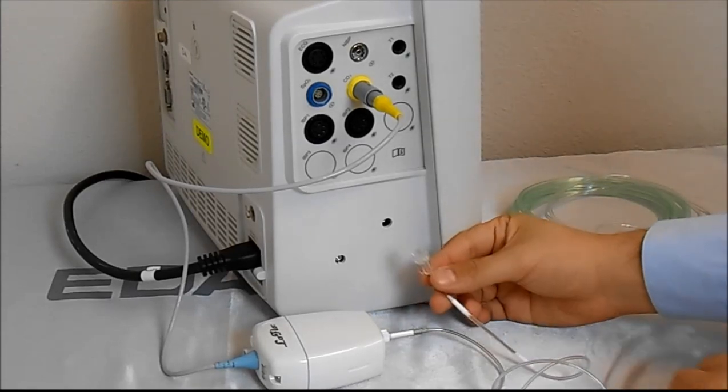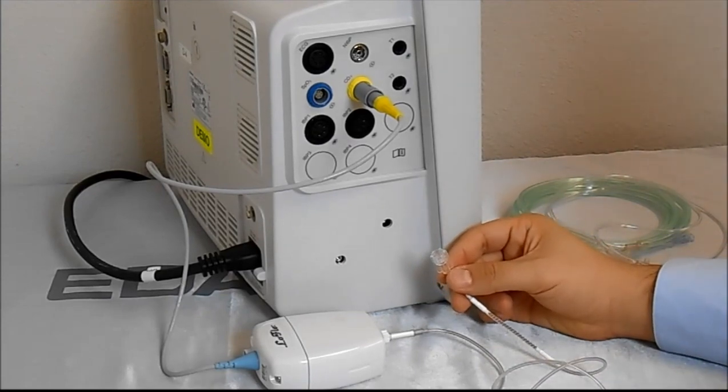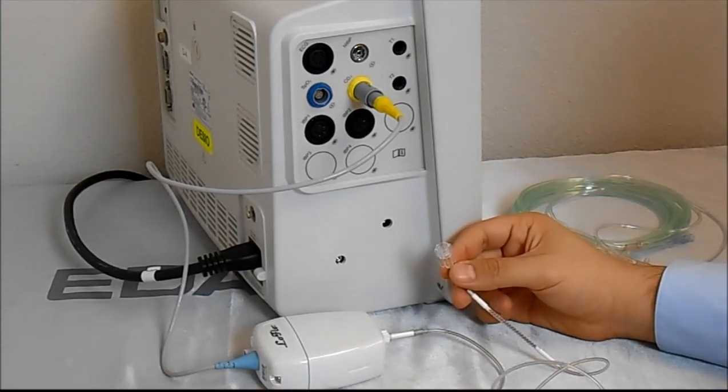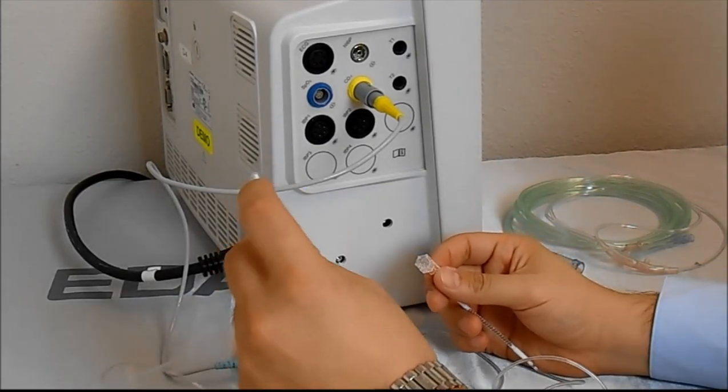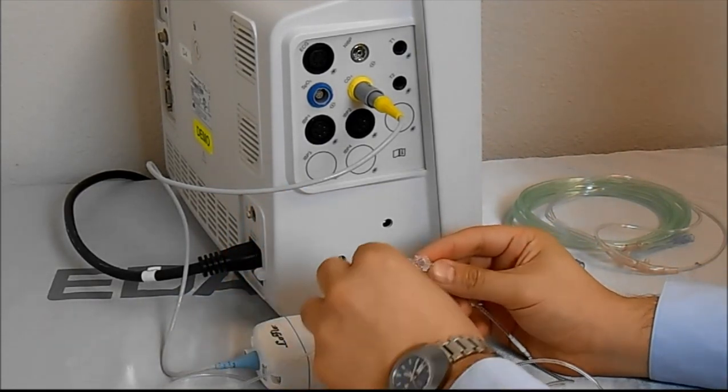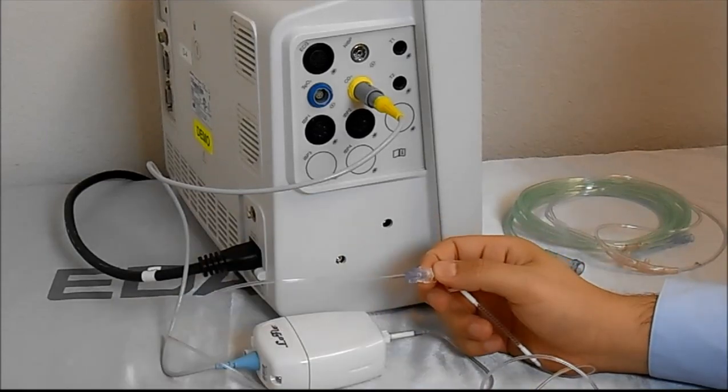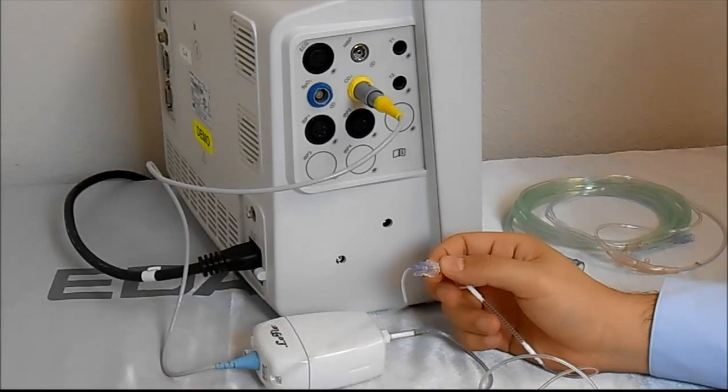For example, I'll take the Salter Labs cannula, just to illustrate how the system works. So you take your cannula, it'll have a female luer lock at the end, you twist it in, you place it on your patient, and now you're set to go. It's that simple.